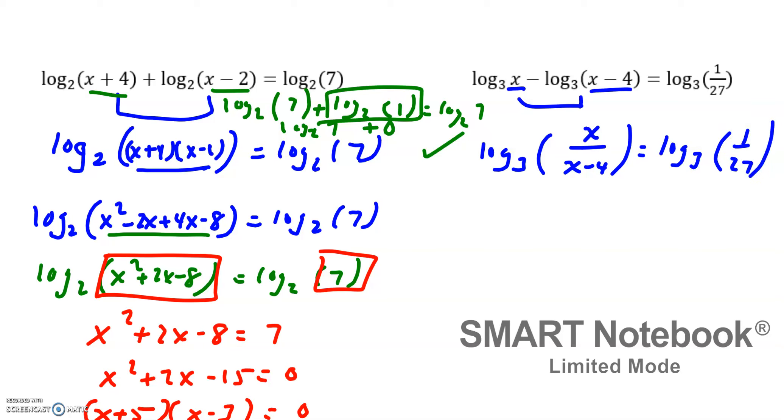And so now you have log base 3 on both sides, so this argument is equal to this argument. So you have x over x minus 4 equals 1 over 27, and now if we have a fraction equal to a fraction, you can cross multiply. So I'll write a little note that you can cross multiply again here.